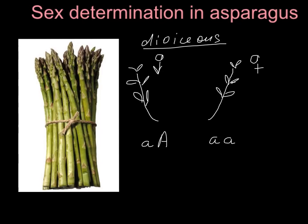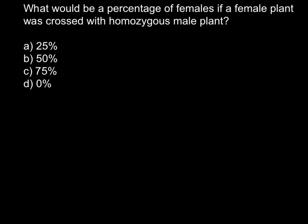On the next slide I will present you a problem and then I will help you with solution. Here is a problem. What would be a percentage of females if female plant was crossed with homozygous male plant? Is it 25%, 50%, 75%, or 0% females? Just take 20 seconds to think about it and then I will give you an explanation.